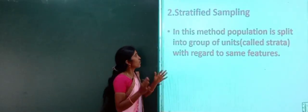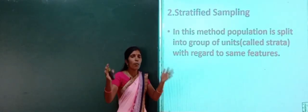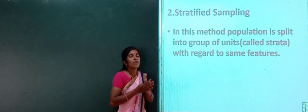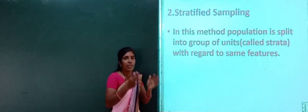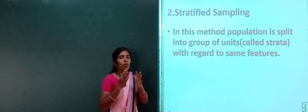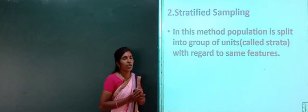The next method is stratified sampling. Stratified sampling is a method in which the population is split into groups of units called strata. The total population is divided into groups, for example 100 units split into groups of 25 units. Whatever groups of units we make are called strata, formed with regard to the same characteristics or features.